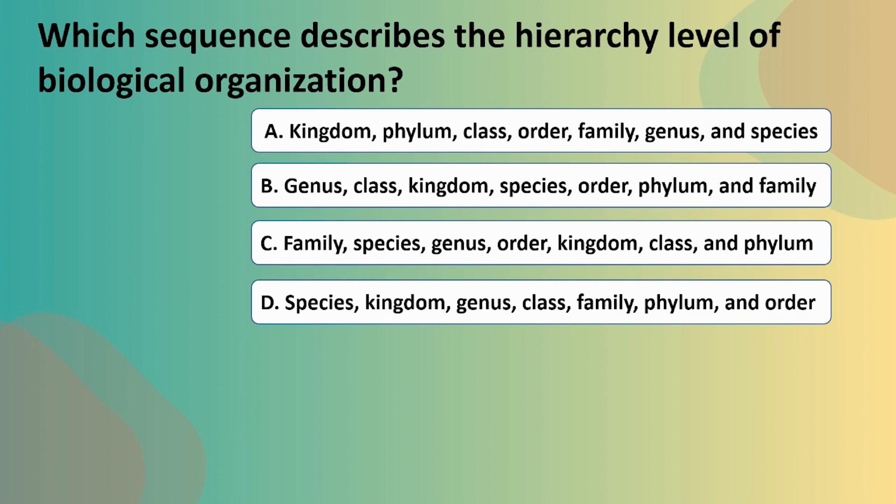Which sequence describes a hierarchy level of biological organization? A: Kingdom, phylum, class, order, family, genus, and species. B: Genus, class, kingdom, species, order, phylum, and family.